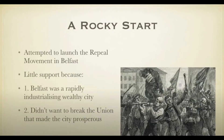Daniel O'Connell started his attempts to launch a repeal movement in Belfast. This gained little to no support there because Belfast was a rapidly industrialising and wealthy city, due to its ties with England and the Industrial Revolution. Belfast had shipbuilding yards, trains, and many things introduced from the Industrial Revolution, and did not want to break from the Union that made the city prosperous.